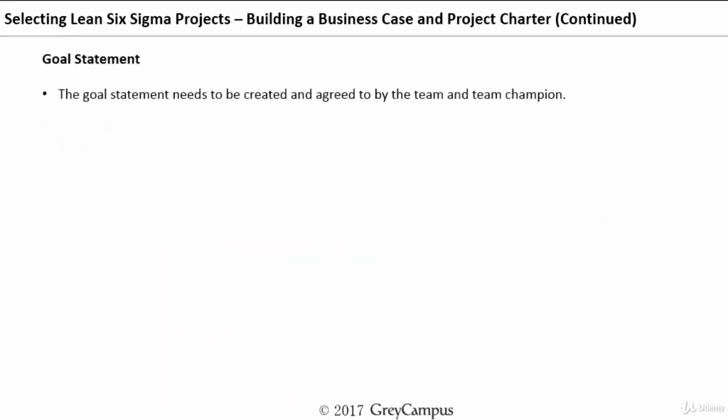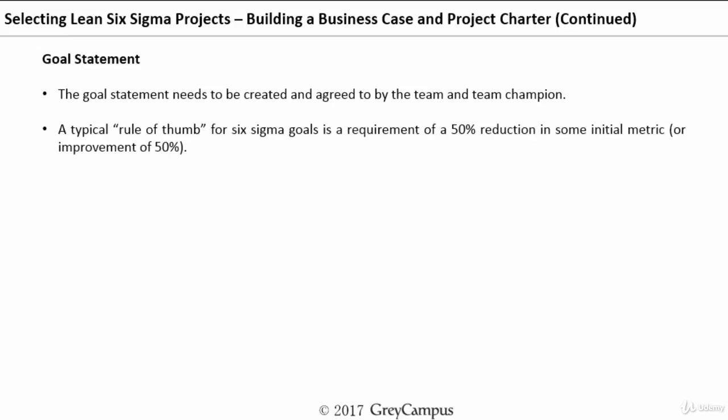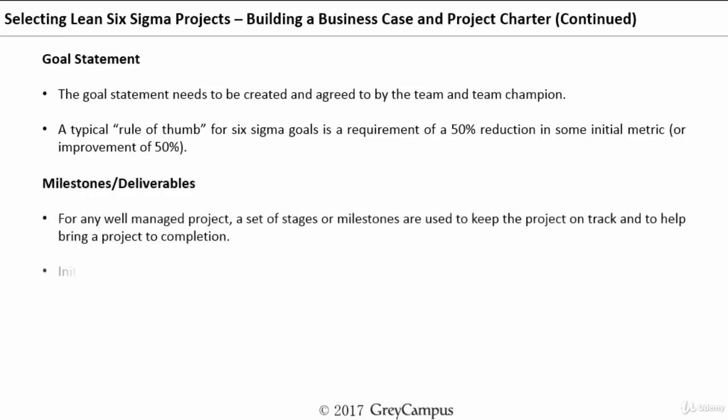The goal statement is equally important as the problem statement. In the goal statement, we set the objectives of what we want to achieve and when. While the problem statement describes the issues, the goal statement clearly states we want to improve from one level to another. Using our example, the ideal goal statement would be: 'We want to reduce rejections from 12% to 8% by July 2018.' This captures the metric (rejections), the baseline (12%), the target (8%), and the deadline (July 2018) — all essential elements of a good goal statement.